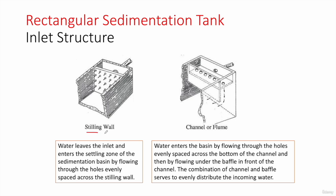This is a 3D view of an inlet structure — a stilling wall or baffled wall, which is the most commonly used inlet structure. Water comes in through an inlet pipe, enters the inlet chamber, and leaves evenly through the holes across all parts of the sedimentation tank. We can also use a channel or flume, where water enters through an inlet pipe into a perforated channel and then leaves under the baffled wall into the tank.